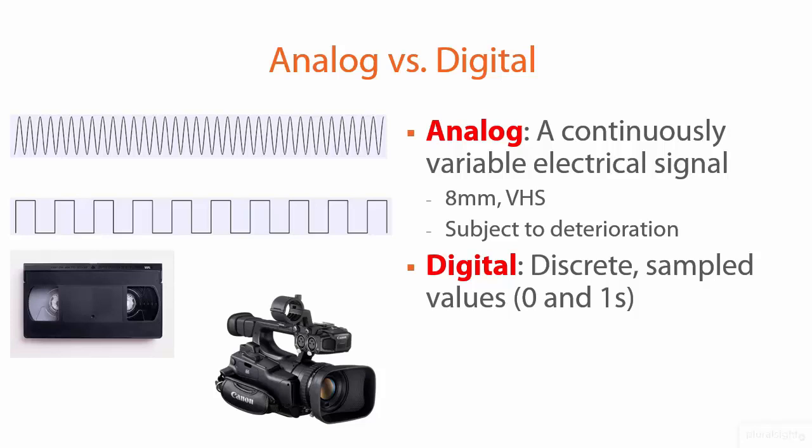Nowadays, digital camcorders can record ultra-high-def, so-called 4K video. This is because the sample rate — the number of 0 and 1 samples collected per second — is very, very high indeed.